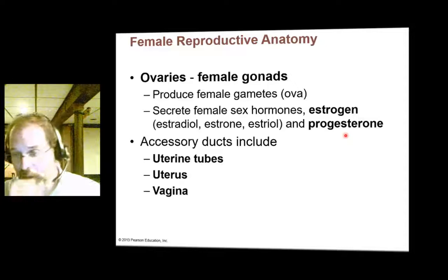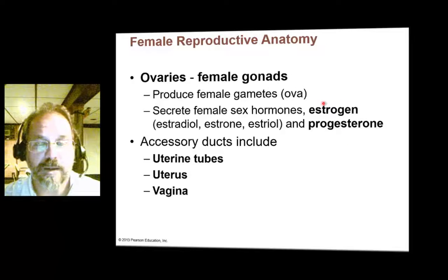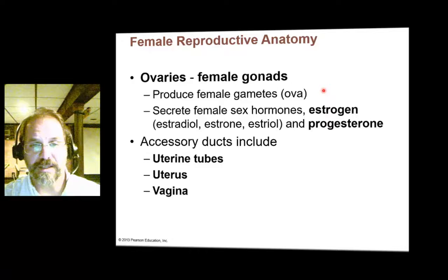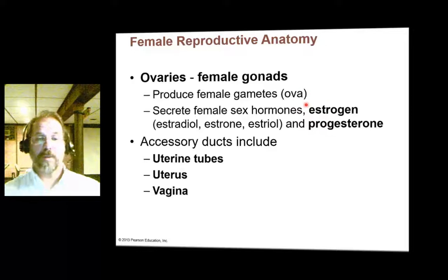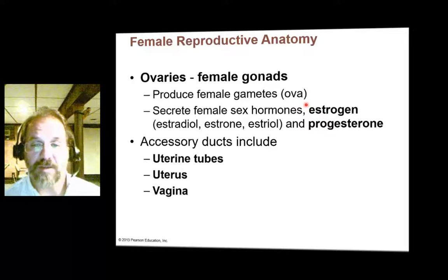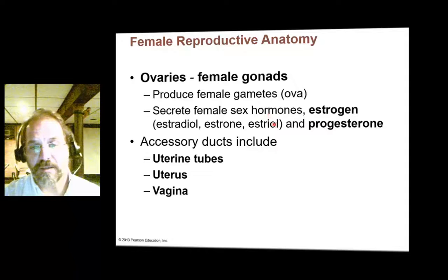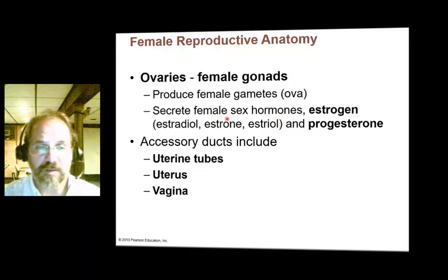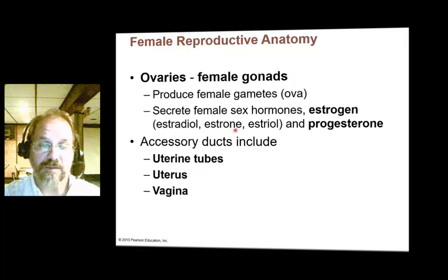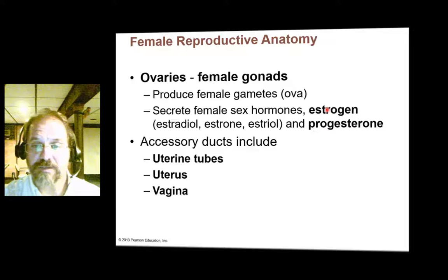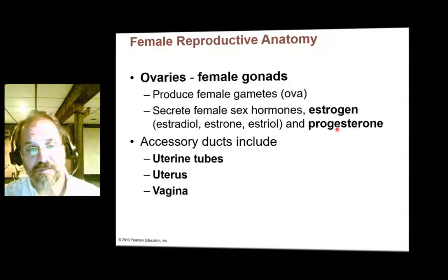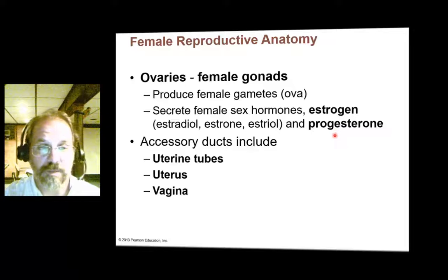Now let's get onto the female reproductive system. The female gonads, or the analog to the testes, are the ovaries. The ovaries are where we produce the female sex cell — female sex cells are called ova, or singular ovum. The ovaries produce a family of hormones called estrogens — estradiol, estrone, estriol — and a related compound called progesterone. Estrogens and progesterone are the two main types of female sex hormones, both produced in the ovaries.